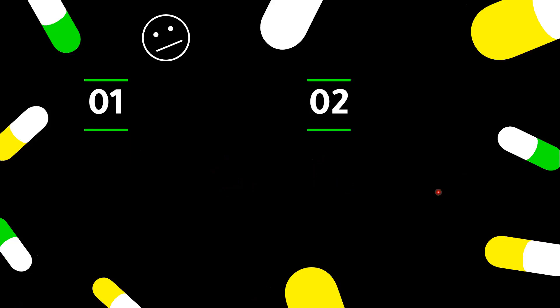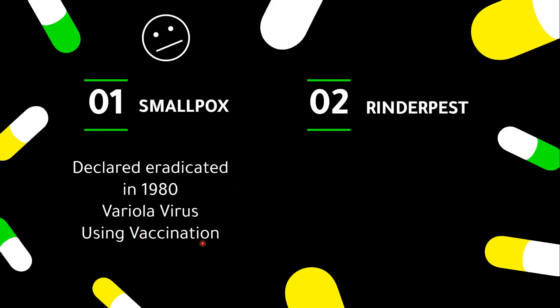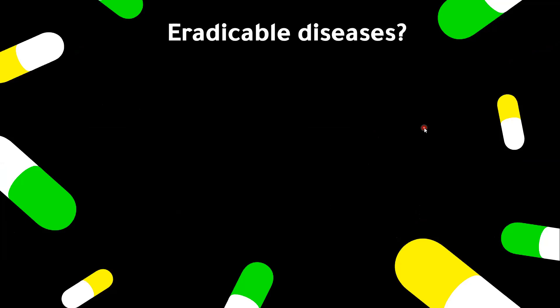There are two diseases that have been completely eradicated worldwide. The first is smallpox, declared eradicated in 1980 — caused by the variola virus and eradicated using vaccination. The second is rinderpest, declared eradicated in 2011, caused by the rinderpest virus. The intervention used was vaccination and sanitary measures. Rinderpest primarily affects cattle.